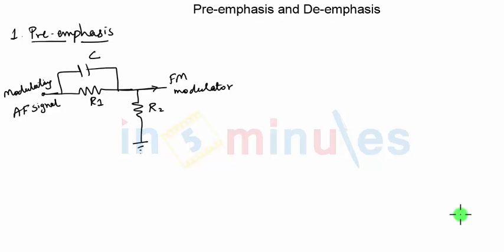The problem is that the effect of noise is not uniform throughout the frequencies. If it were uniform, we would have tried to increase the signal to noise ratio for all frequencies equally. But here the signal to noise ratio is good at low frequencies and very low at high frequencies. So the effect of noise is not uniform on all modulating frequencies.